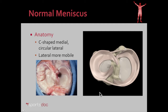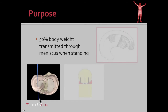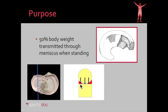Anatomically the meniscus is c-shaped. The medial meniscus looks very much like a c. The lateral meniscus is a little bit more of a closed loop or more of a circle but still c-shaped. About half of the body weight is transmitted through the meniscus when standing. The meniscus, represented as red triangles in the front and the back, forms a gasket between the curved surface of the femur and the relatively flat surface of the tibia, so that when the load comes through the knee some of it is distributed through the meniscus and some through the cartilage and bone.